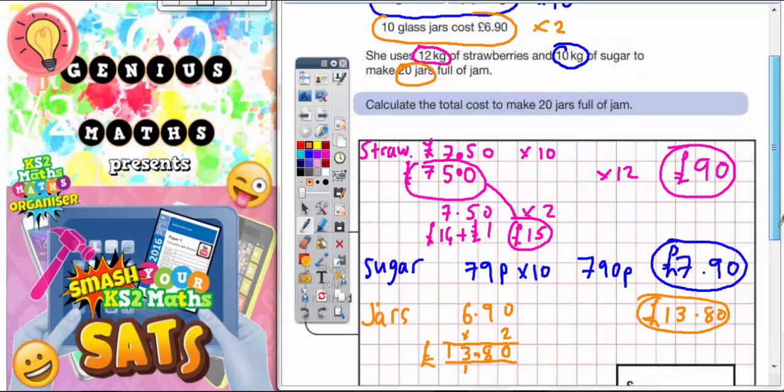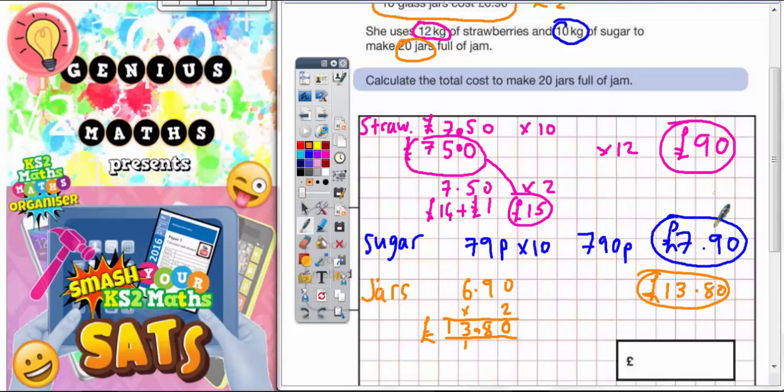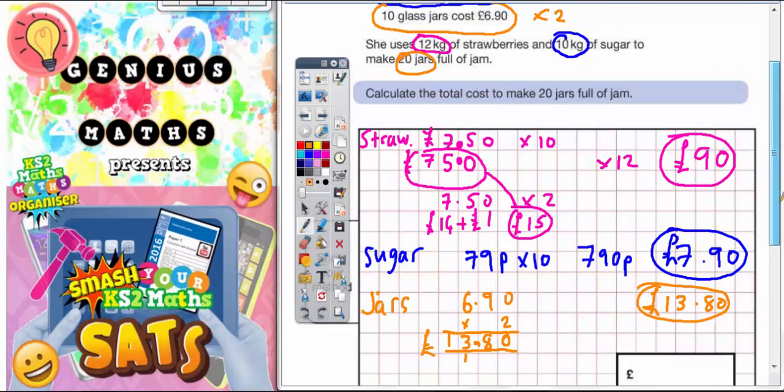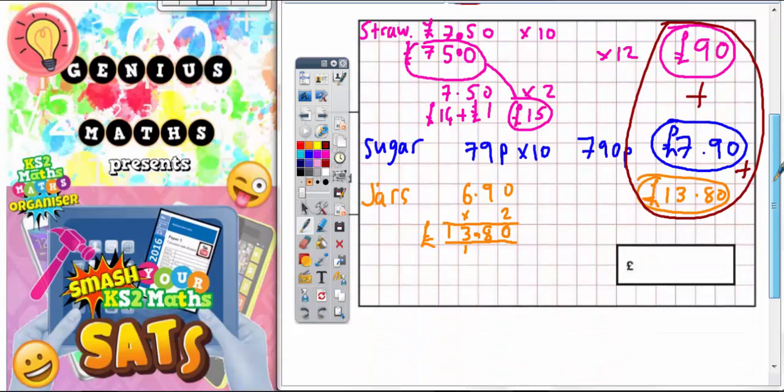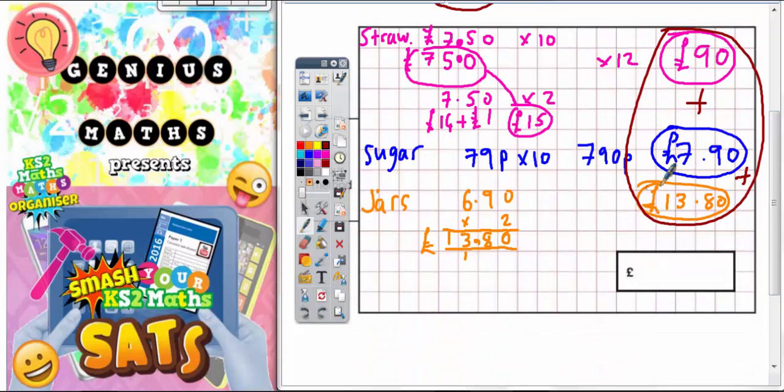However, even though I've worked out three separate calculations, I've still not got what it's asking me for. It's actually asking me for the total cost. So I now need to add all of these three answers together. If I left it at this point without doing any more, I will get two marks. But I need to find my total cost to get my third mark. So here we go.